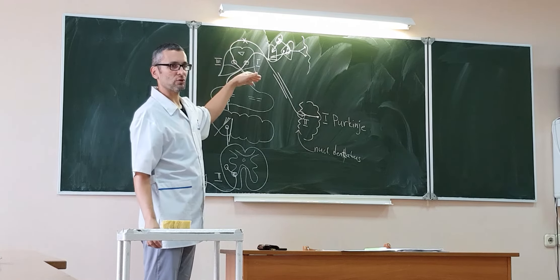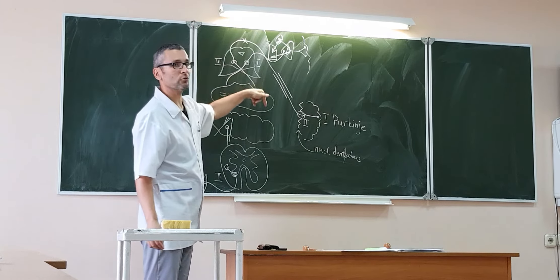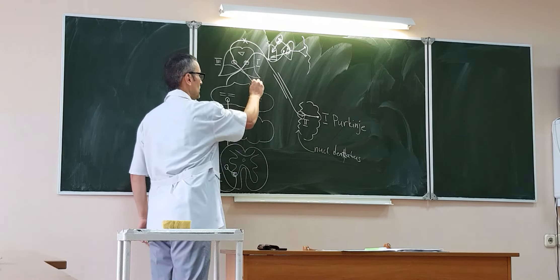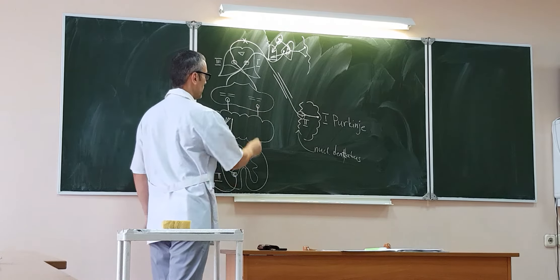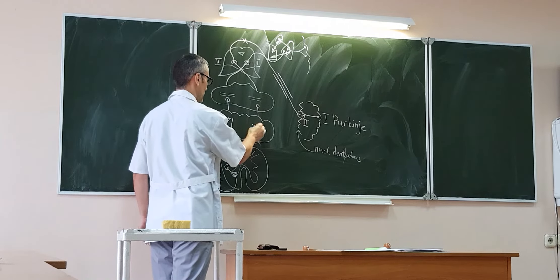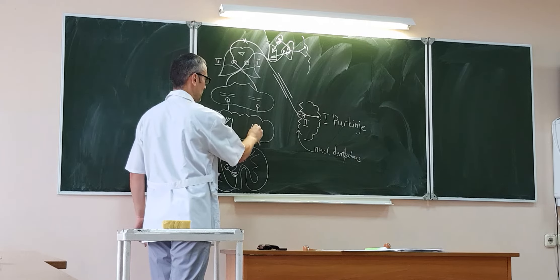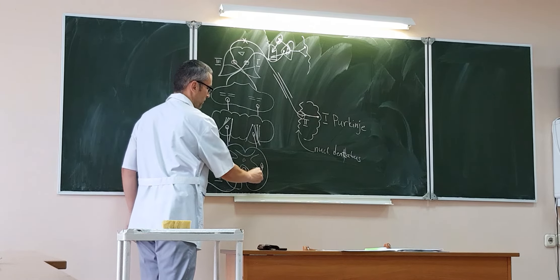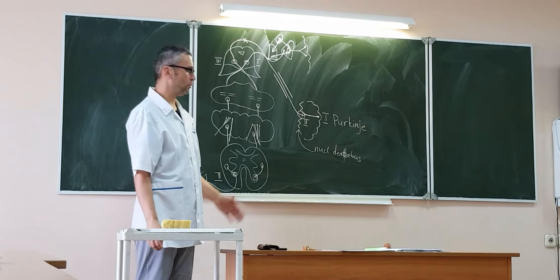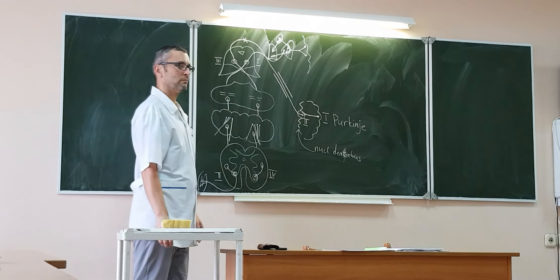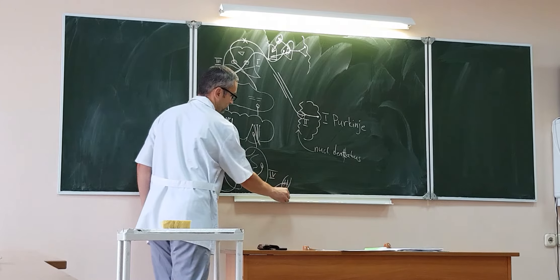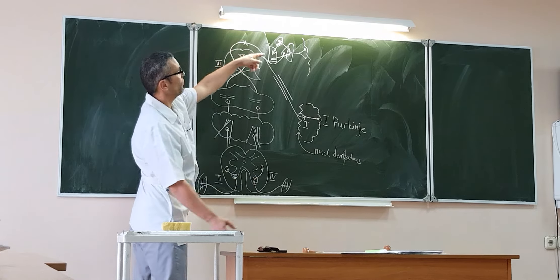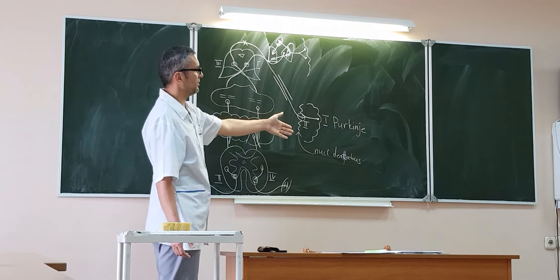Now you can see this decussation — the ventral decussation of Foreli. If we consider the whole tract, it comes back to the same side: it starts from the left hemisphere of the cerebellum, decussates one time in the superior medullary velum, and decussates a second time in the ventral decussation of Foreli, ending up on the same ipsilateral side. Then it goes through the pons in its ventral part, then through the medulla in its lateral part, then to the lateral funiculi of the spinal cord, and finally to the motor nuclei of the anterior horn.